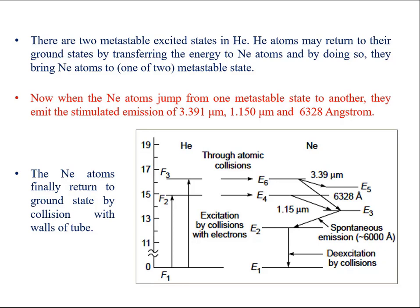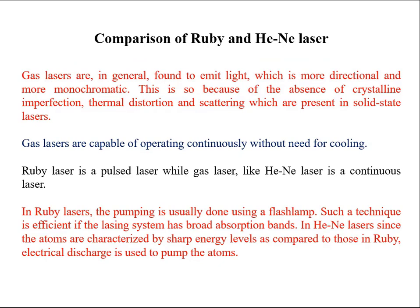After discussing the mechanisms of ruby laser and helium-neon laser, we can compare the two. Gas lasers are more directional and monochromatic because in gases there is no possibility of crystalline imperfections, thermal distortions, and scattering, which are problems in solid state lasers. Secondly, gas lasers are capable of operating continuously without the need for cooling, because cooling a solid body is difficult. The ruby laser is a pulsed laser while the helium-neon laser is a continuous laser.